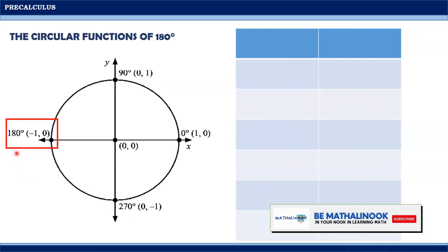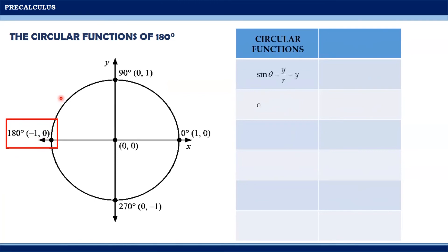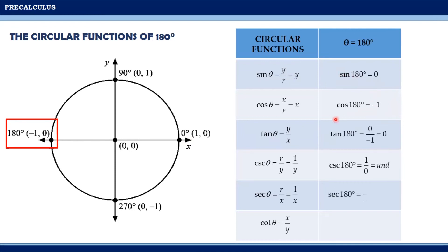Moving on to 180 degrees with coordinates (-1, 0), wherein x equals -1 and y equals 0. The circular functions of this angle are: sine 180° = 0; cosine 180° = 0/(-1) — wait, cosine 180° = x = -1; cosecant 180° = 1/0 = undefined; secant 180° = 1/(-1) = -1; and cotangent 180° = 0/0 = undefined.